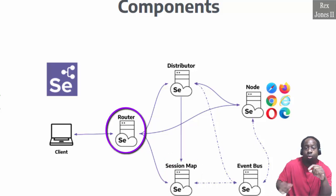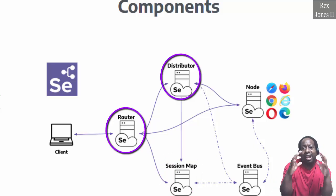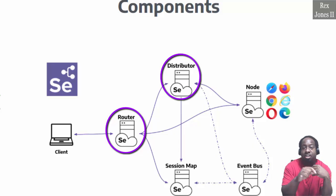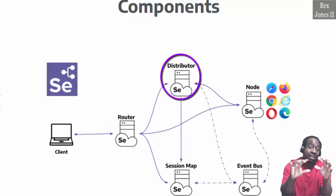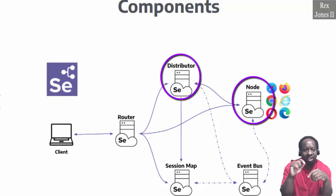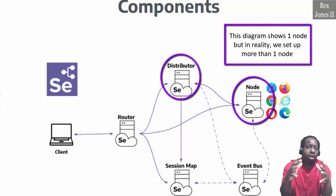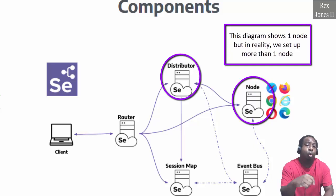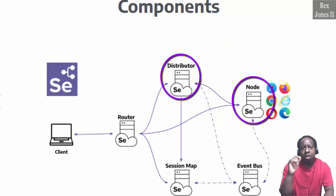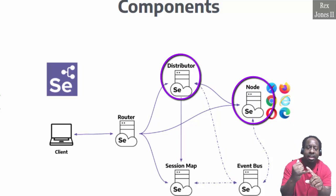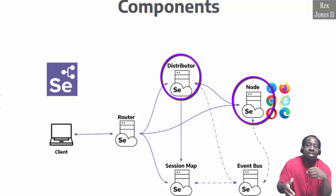When it comes to the router and distributor, a session request is sent to the distributor. The distributor is responsible for selecting a node to run our test. This diagram shows one node, but in reality we set up more than one node. The node can be a physical machine or virtual machine that executes our test scripts.